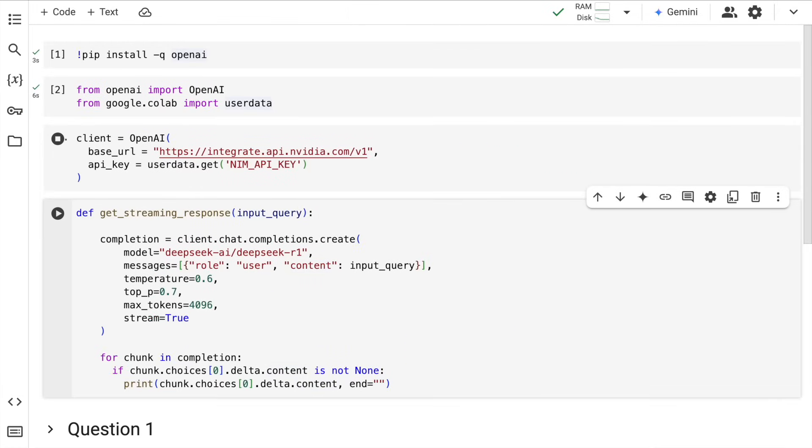Next I create an OpenAI client and save it into a variable client. I set the base URL, which is the NVIDIA's NIM API URL, and I pass in the API key.